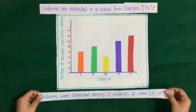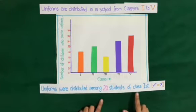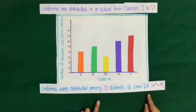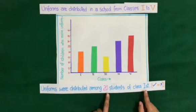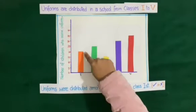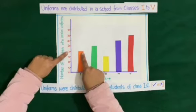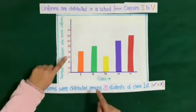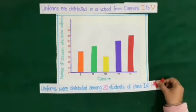First question: uniforms were distributed among 20 students of class 1st. We will see whether this statement is correct or wrong. We have to look at the number of students among whom uniforms were distributed from class 1. Looking at the rectangular bar of class 1, the number of children is 20. So the statement is correct — we will put a tick against this statement.